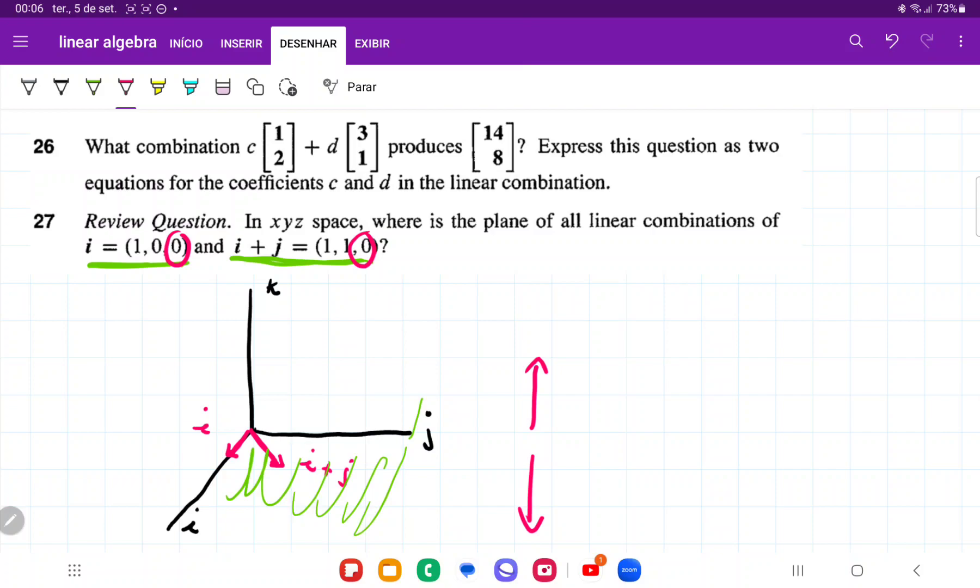And so all combinations of i and i plus j is going to be all in the ij plane. And so we're going to say here that it's going to be in the ij plane. Another way to say it is in the xy plane, right? Because this is the y axis and this is the x axis. So everything's stuck on the xy and we can't move in the z direction.